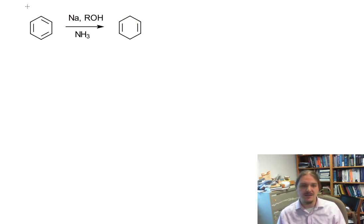So the Birch reaction is actually a dissolving metal reduction. You may have encountered dissolving metal reductions in the sodium and ammonia reduction of alkynes to form trans-alkenes. This actually uses a similar reagent system, though there's an alcohol added as a proton source.